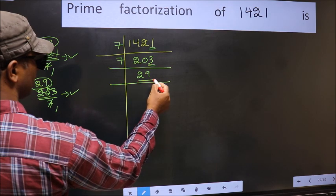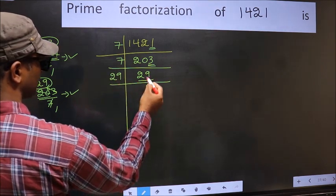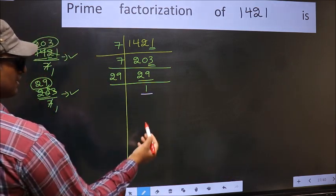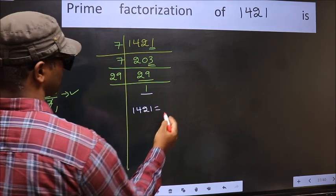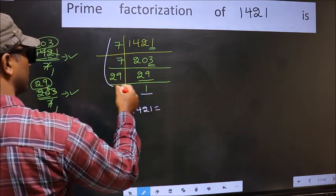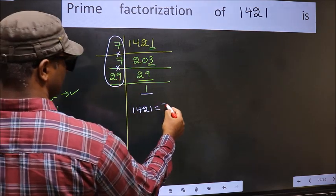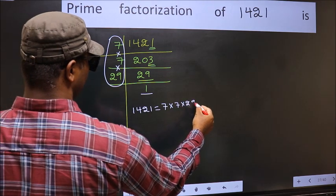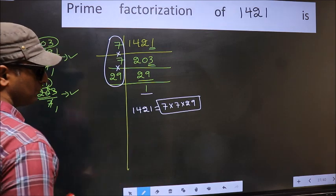Now we have 29. 29 is a prime number, so 29 once is 29. We got 1 here. So the prime factorization of 1421 is the product of these numbers, that is 7 into 7 into 29. This is the prime factorization of 1421.